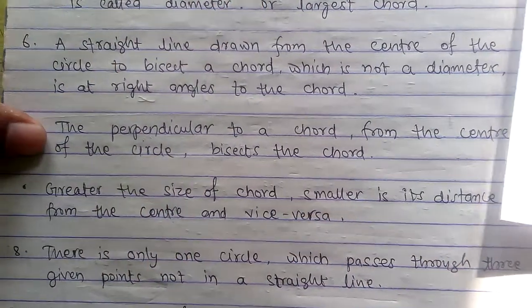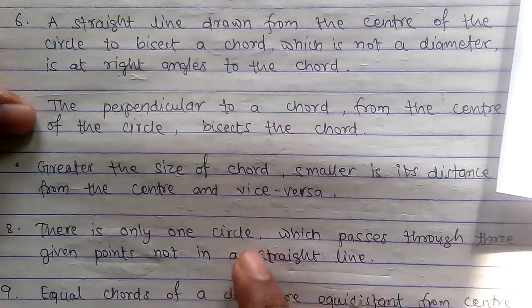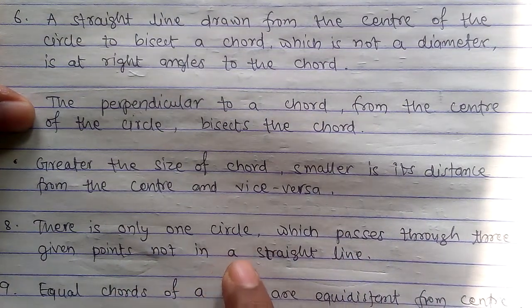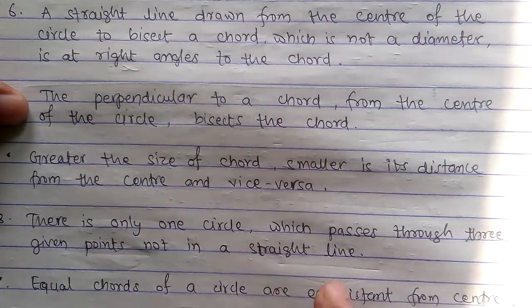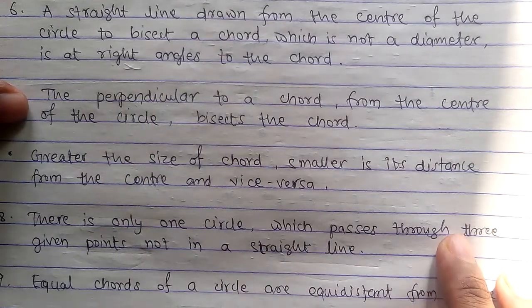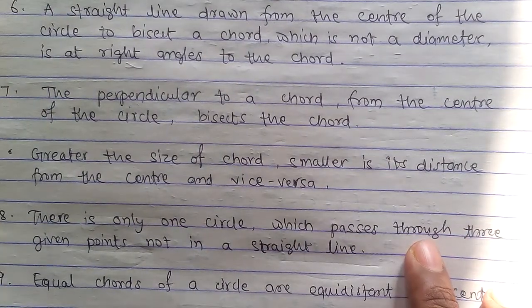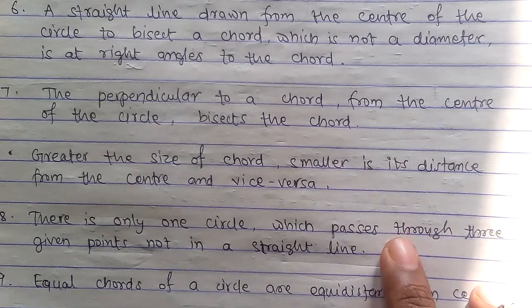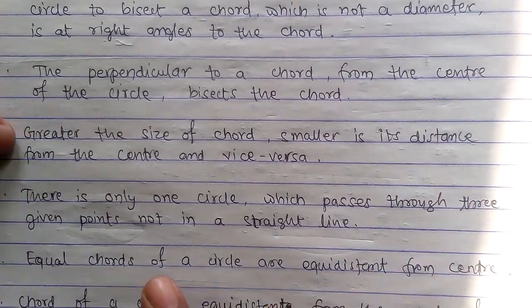Point number eight: There is only one circle which passes through three given points not in a straight line. If you have three points and they are not in a straight line, there will be only one circle that touches all three points.